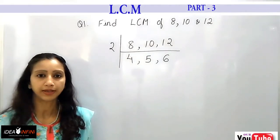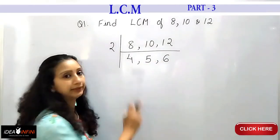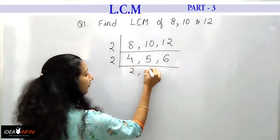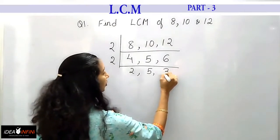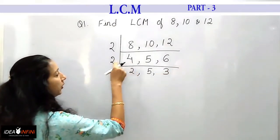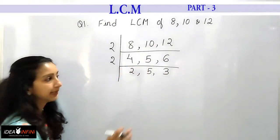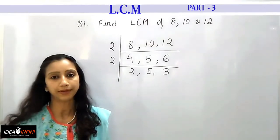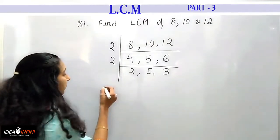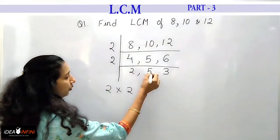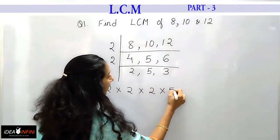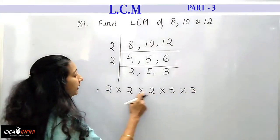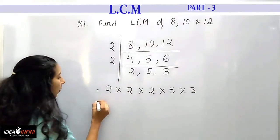Once again I see that two of these are even numbers, so one more 2 can go here: 4 ÷ 2 = 2, 5 remains as it is because it is not divisible by 2, and 6 ÷ 2 = 3. Now there is no common factor between 2, 5, and 3, so I write all the factors and multiply them: 2 × 2 × 2 × 5 × 3.